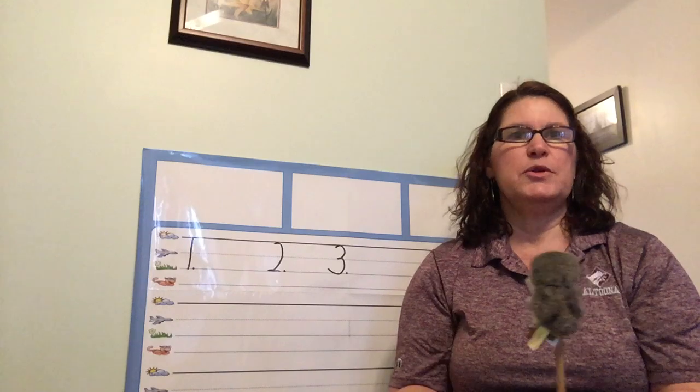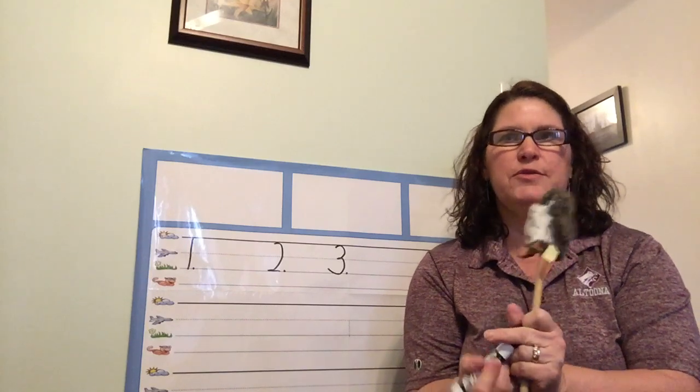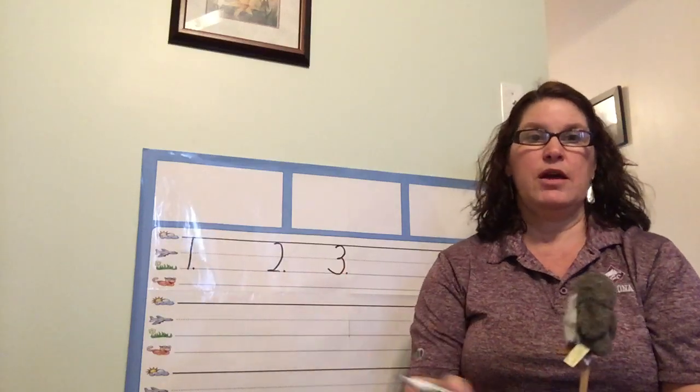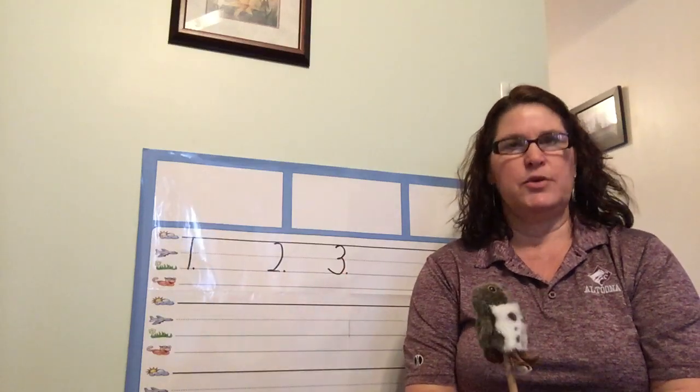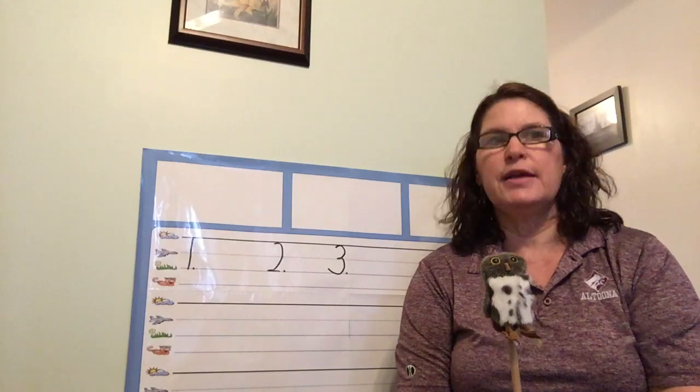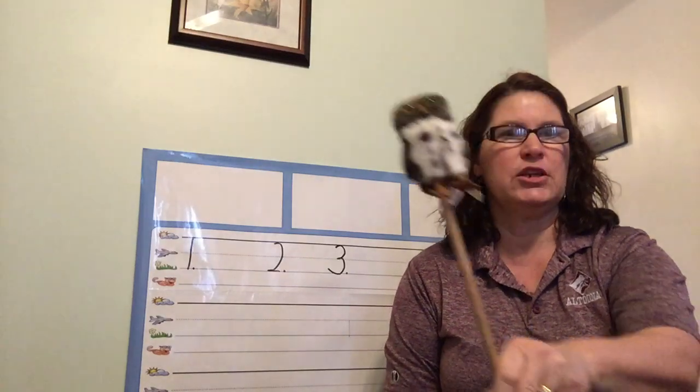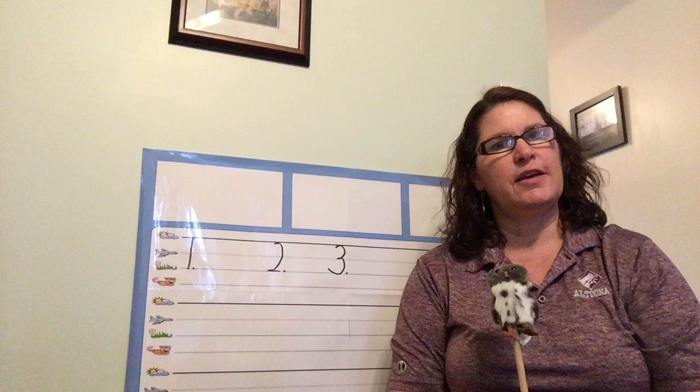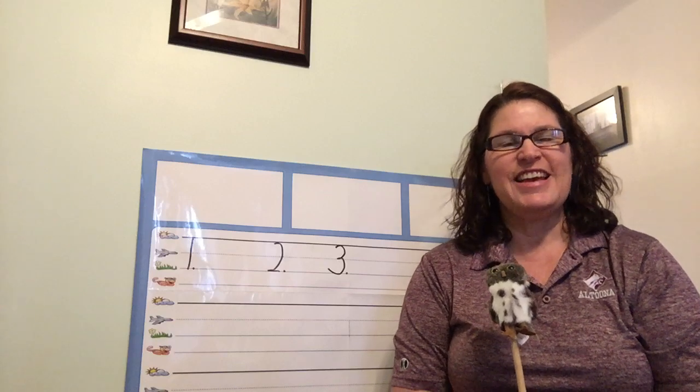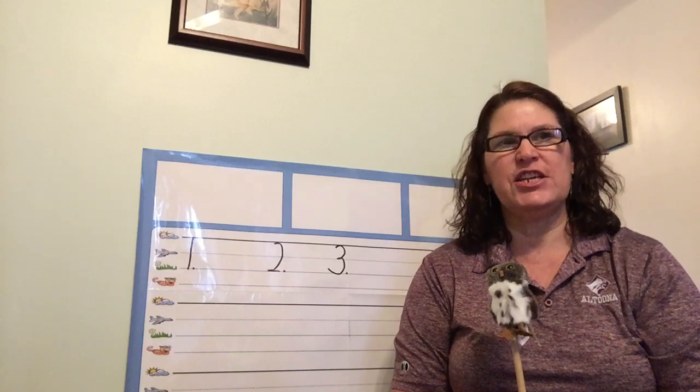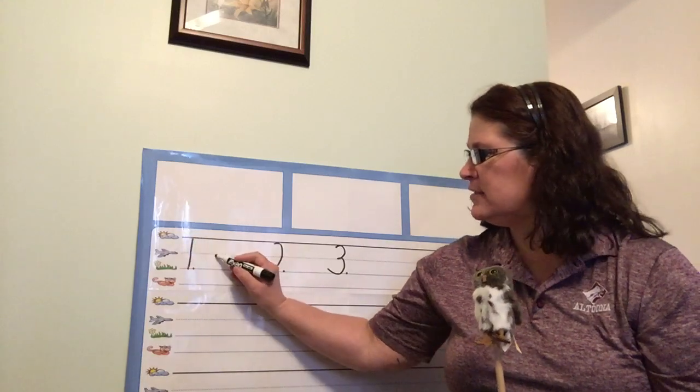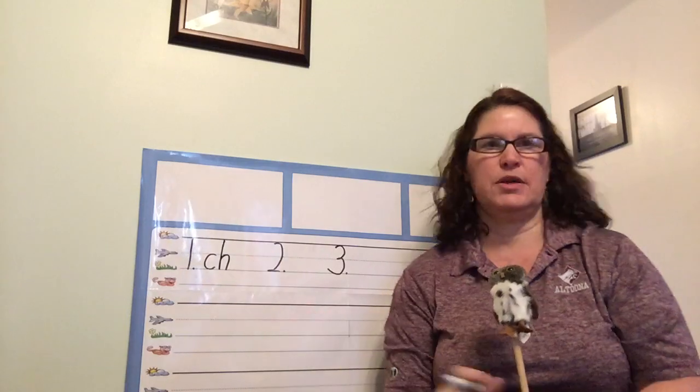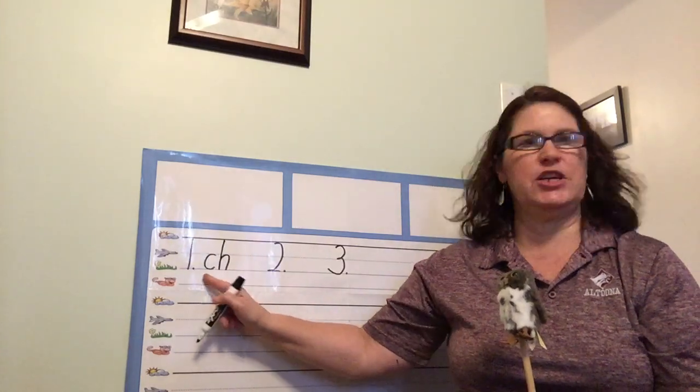The first thing we're gonna do is review our sounds. We're gonna do three sounds so if you look at the top of your paper you have the numbers one, two and three. Let's write that. C-H chin ch. Nice writing. C-H chin ch.